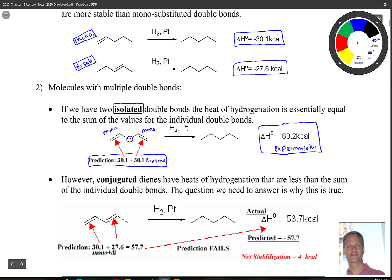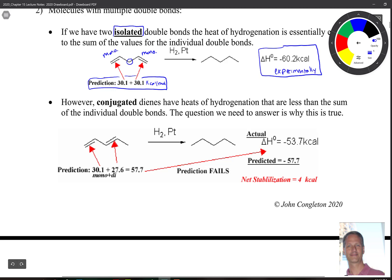Let's look below. What about this arrangement? So here we have, if we're just adding them up, if they're additive, we have a monosubstituted and then down here, the disubstituted. So that would be negative 30.1 plus negative 27.6 gives us negative 57.7 kcals per mole. So that's what we predict to occur.